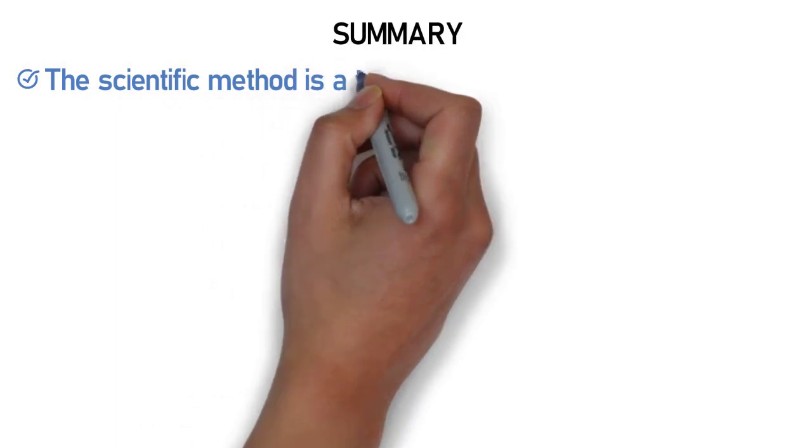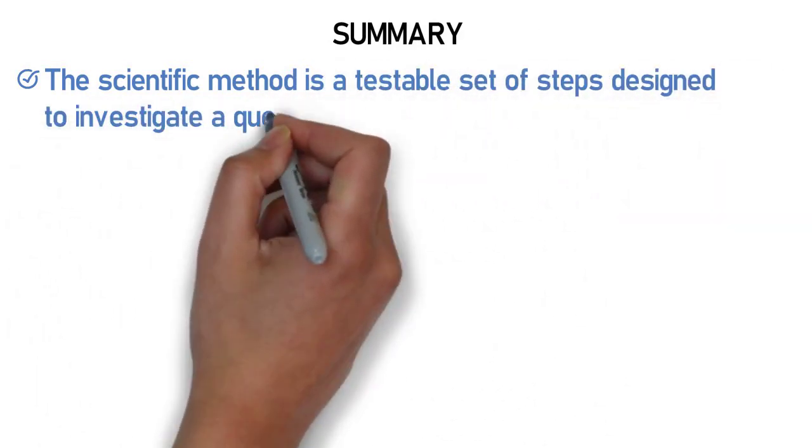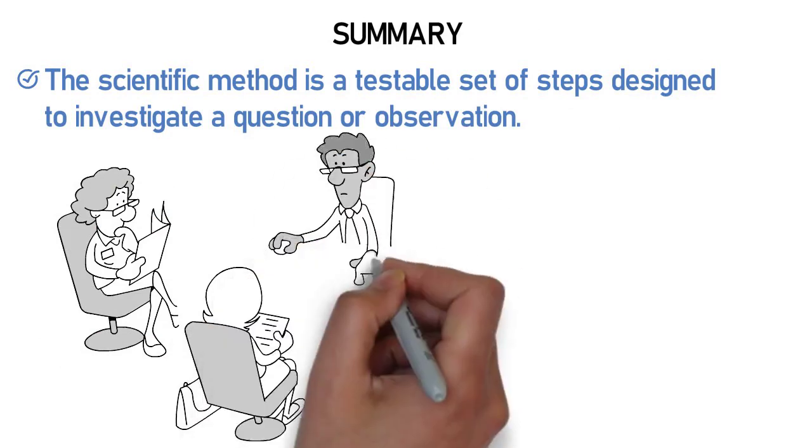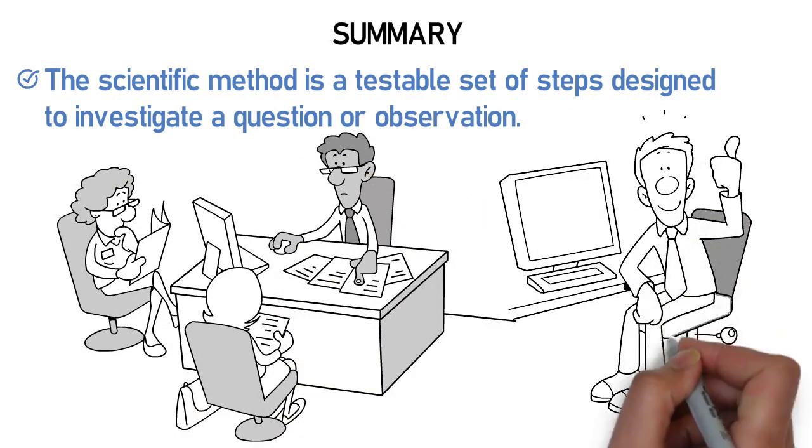To summarize, the scientific method is a testable set of steps designed to investigate a question or observation. The scientific method ensures that any conclusion generated is reliable and testable.